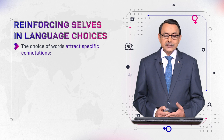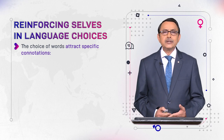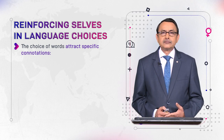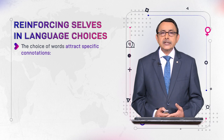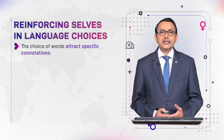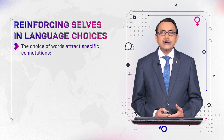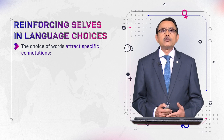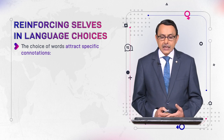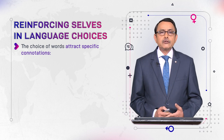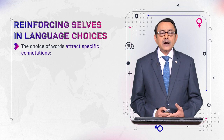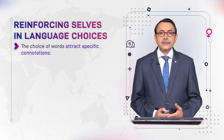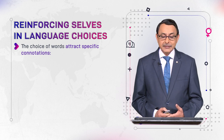The choice of words attracts specific connotations and social meanings. These meanings are not word meanings — they are associated with words by society, by social uses. That is why we call them connotations or social meanings; they are additional meanings of a word. When we use particular words to describe a particular sex or class, gradually, with the passage of time, these labels acquire social meanings.